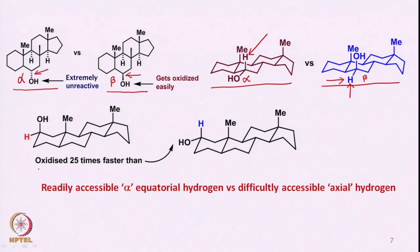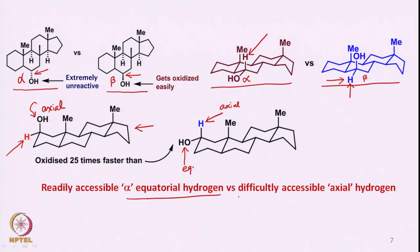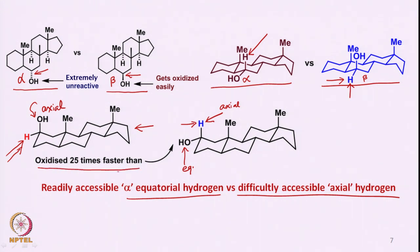Similarly, if a molecule has its hydroxy group axially oriented but the hydrogen equatorially oriented, versus another molecule where the hydroxy group is equatorial but the hydrogen is axial, the axial hydrogen is very difficult to access whereas the equatorial hydrogen is easily accessible during oxidation. This is why the molecule with an axially-positioned hydroxy group (equatorial hydrogen) is oxidized 25 times faster.